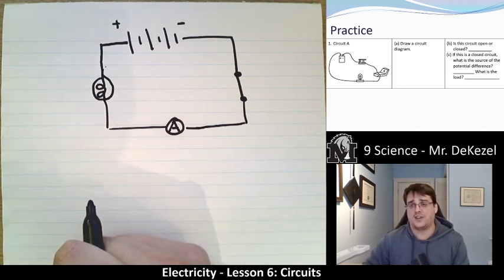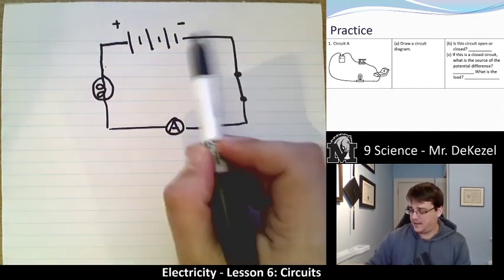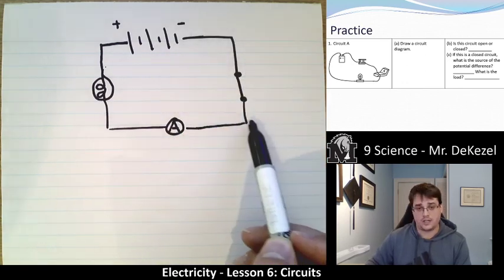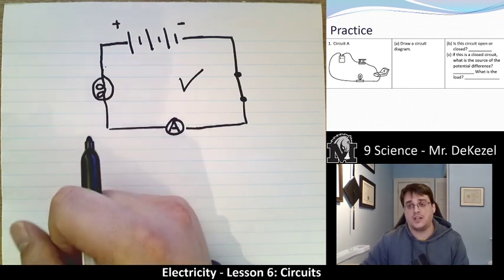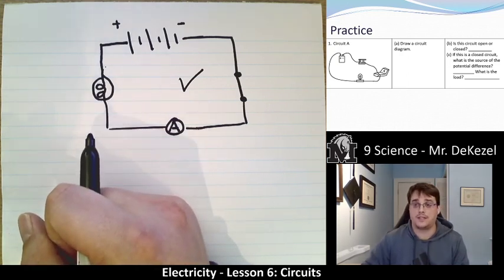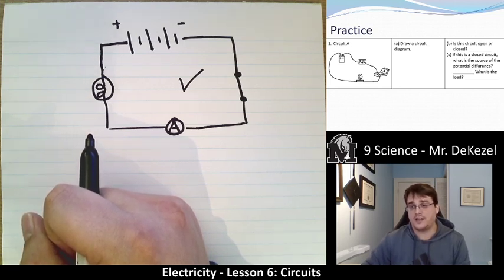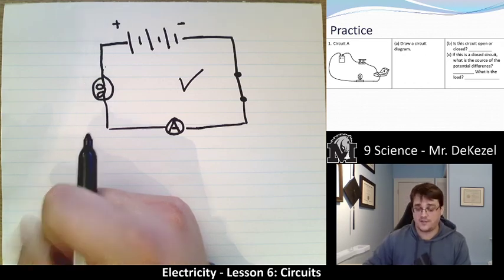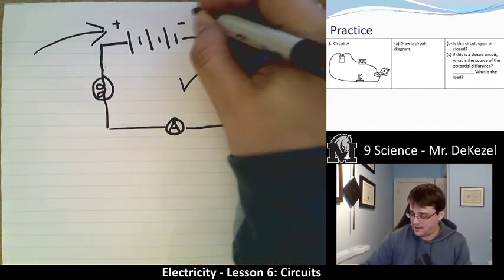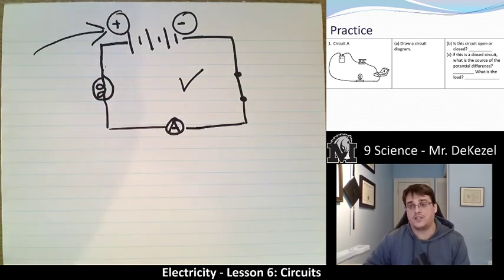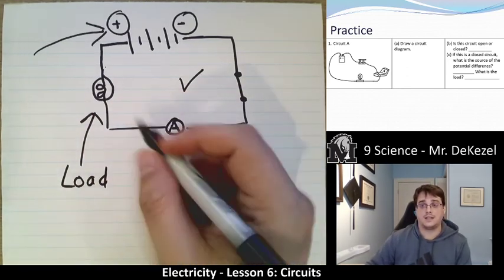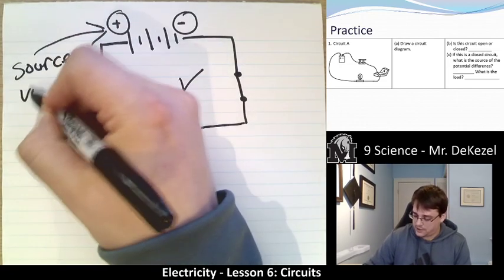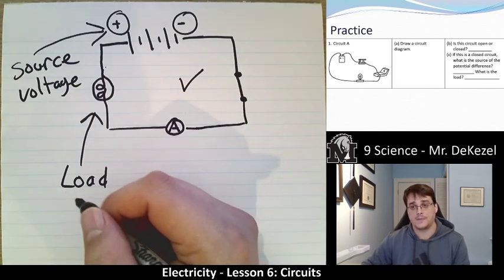Part B asks if this circuit is open or closed. We can see that electrons would be able to flow down this wire, through the switch, through the ammeter, through the load, and back to the other side of the battery — so this circuit is closed, and electrons are allowed to flow through it. Part C asks for the source of the potential difference, which is always the battery: we have negative buildup on one side and positive buildup on the other. And the load is the bulb — the thing that uses up the energy.